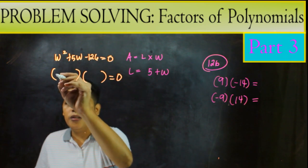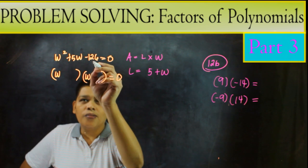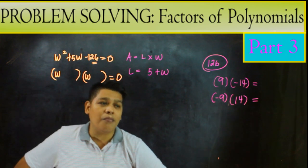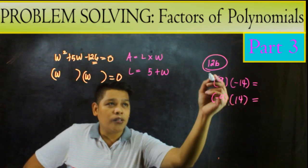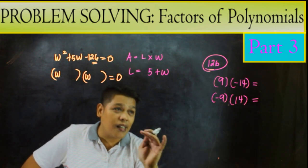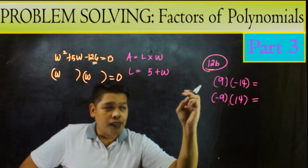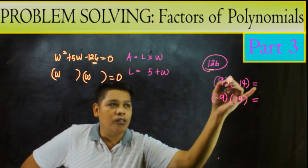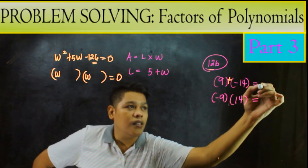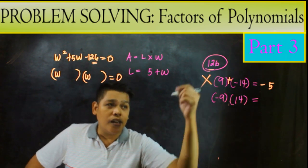Pagpapactor natin dyan. So meron tayo ditong W. May W tayo rito. May W tayo rito. Ngayon, iisip tayo ng 126. Na factor niya kapag pinag plus is positive 5 ang sagot. So kapag ito, yung factor ng 126 is 9 and 14. So dahil negative yan, isa dapat dyan na negative. So simulan natin muna. 9 times negative 14. So pag pinag plus natin ito, ang dapat kang lalabas is positive 5. Eh, hindi naman siya positive 5. Ito ay negative 5. So ibig sabihin, this is not the factor nito ng 126 na kailangan natin.